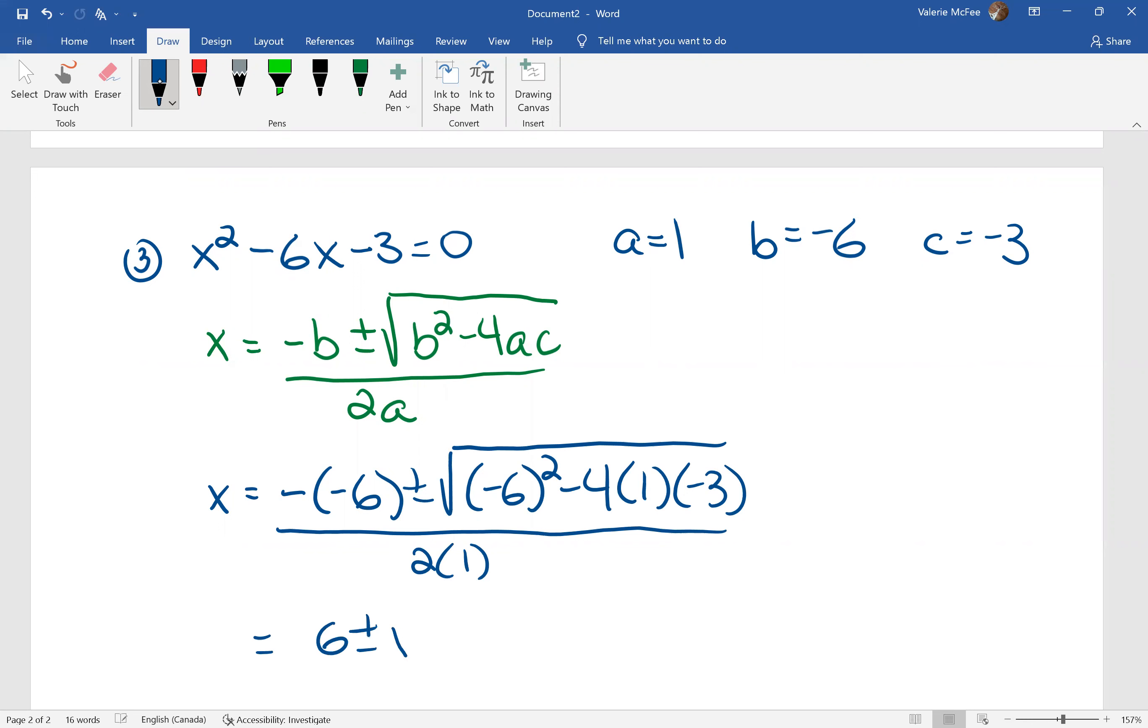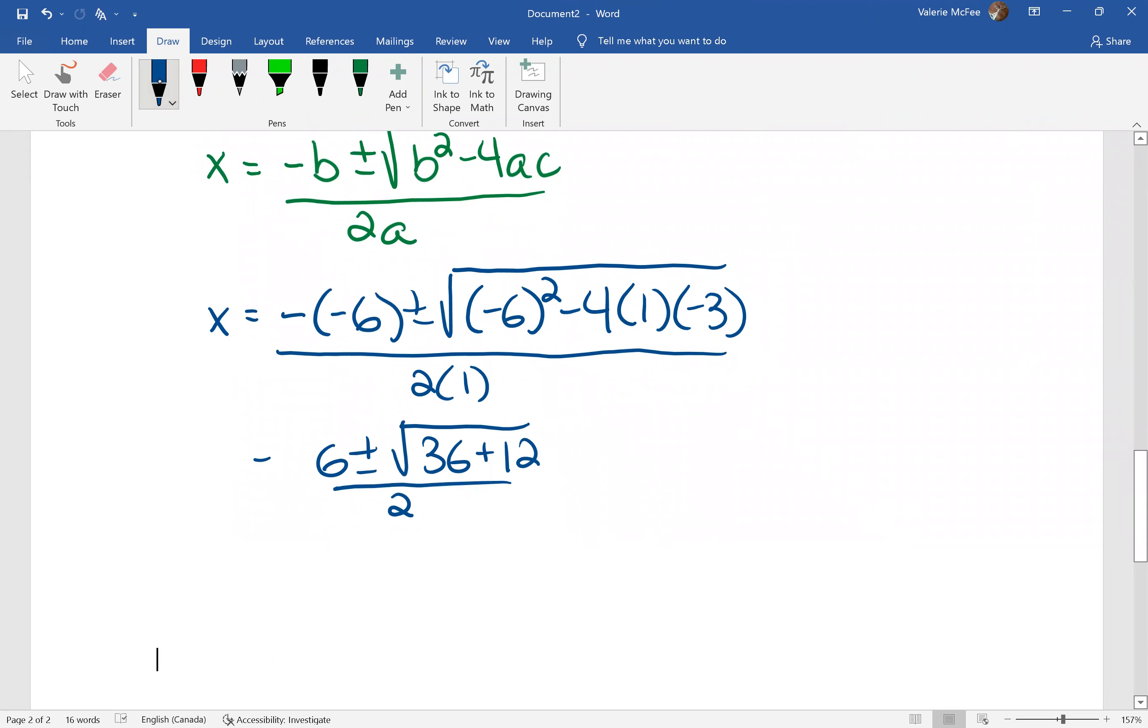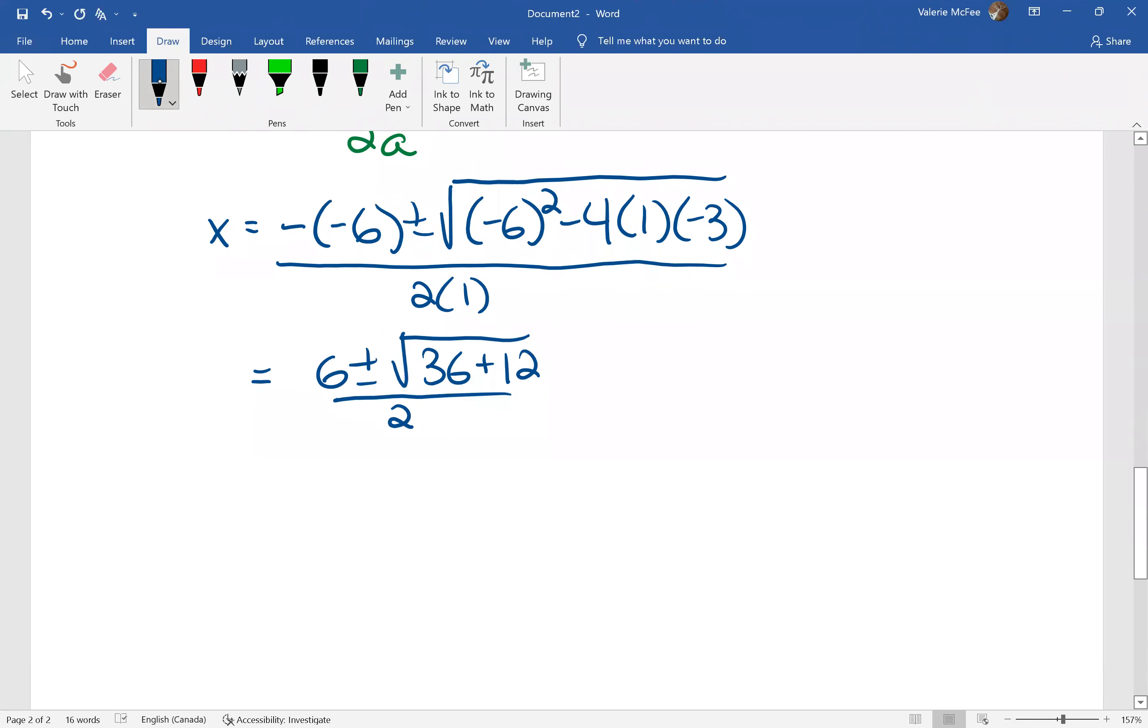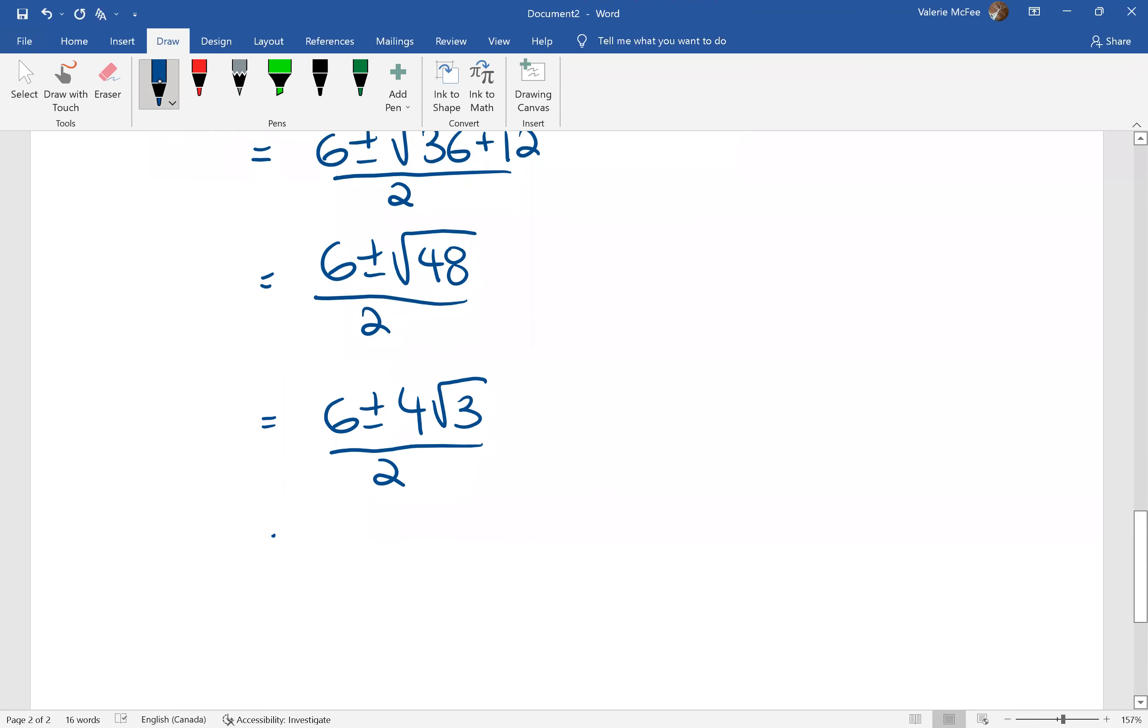Six plus or minus the square root of 36 plus 12, all over two. We can simplify the square root of 48.